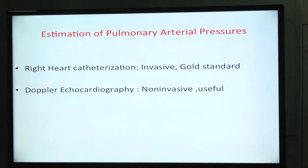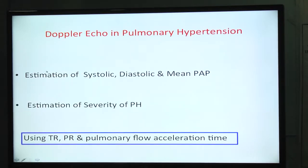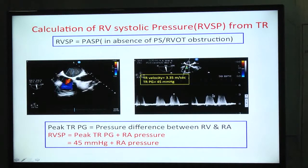Though right heart catheterization is the gold standard for estimating pulmonary arterial pressures, echocardiography is a non-invasive bedside method that provides useful information. We can estimate systolic, diastolic, and mean pulmonary arterial pressure using tricuspid regurgitation jet velocity, pulmonary regurgitation jet velocity, and pulmonary flow acceleration time.